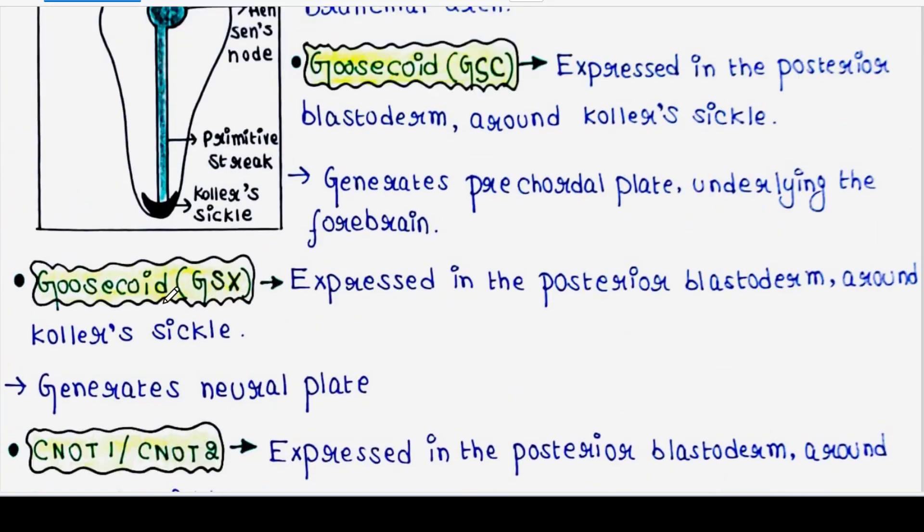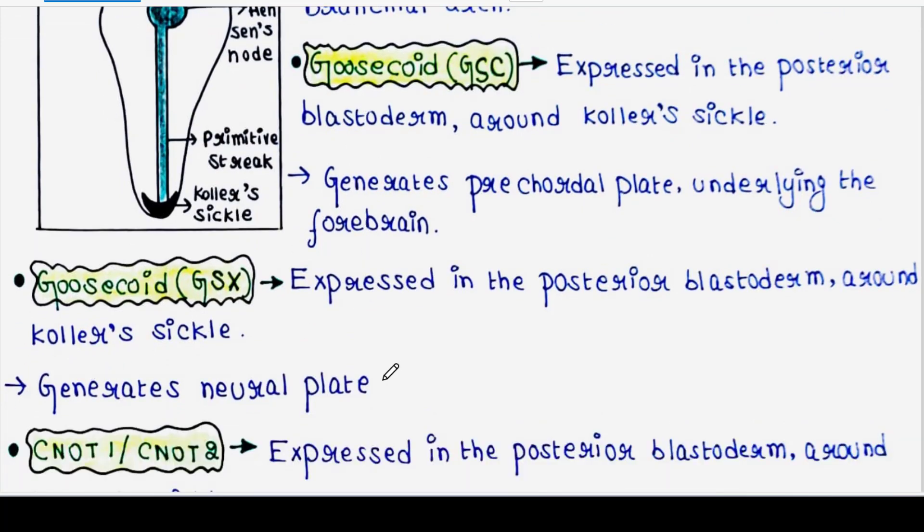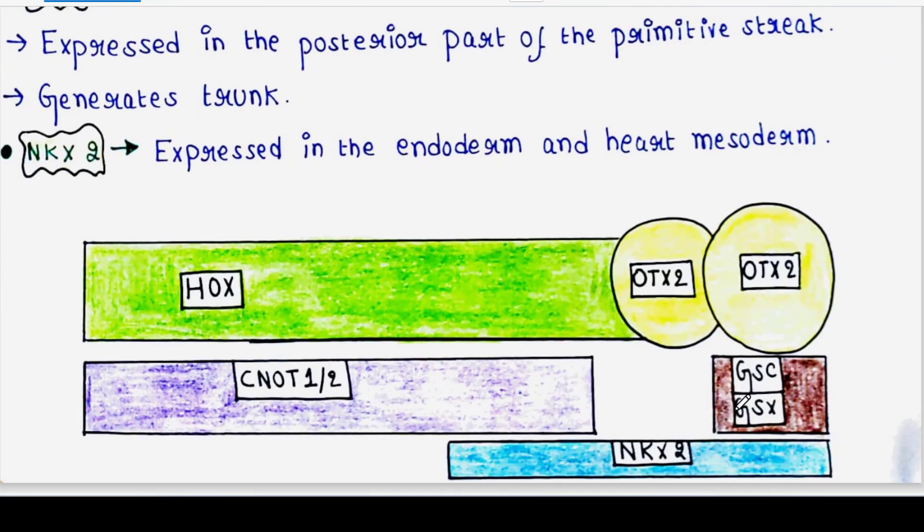Next is one more goosecoid gene, GSX. It is also expressed in the same position, that is expressed in the posterior blastoderm around Koller's sickle. It generates neural plate.